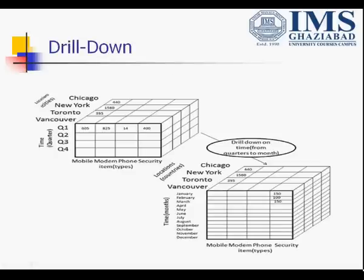Another operation is drill-down, which is the reverse of roll-up and is used to give detail from lower to higher detail. For example, in the upper half there are four quarters: Q1, Q2, Q3, and Q4. After performing the drill-down operation on that cube, the quarter time is converted into monthly time — from January, February, March, up to December. This means we can analyze quarterly data at the monthly level, giving detailed information. This is the drill-down operation.